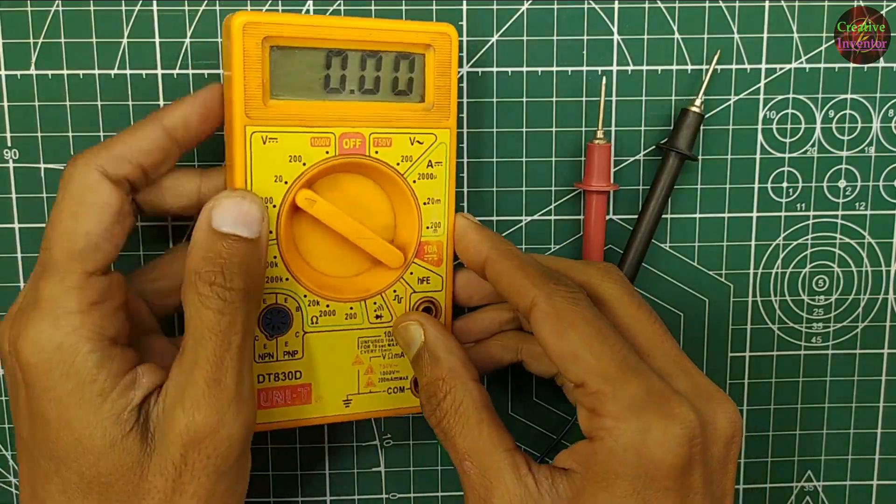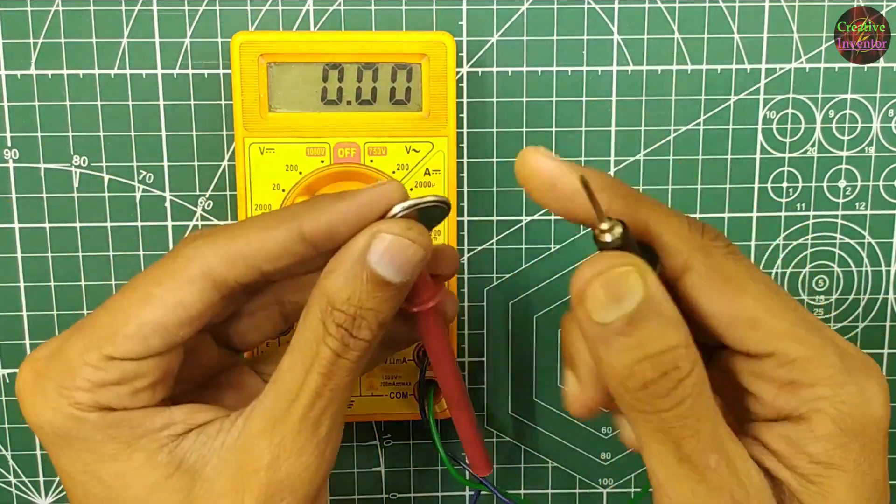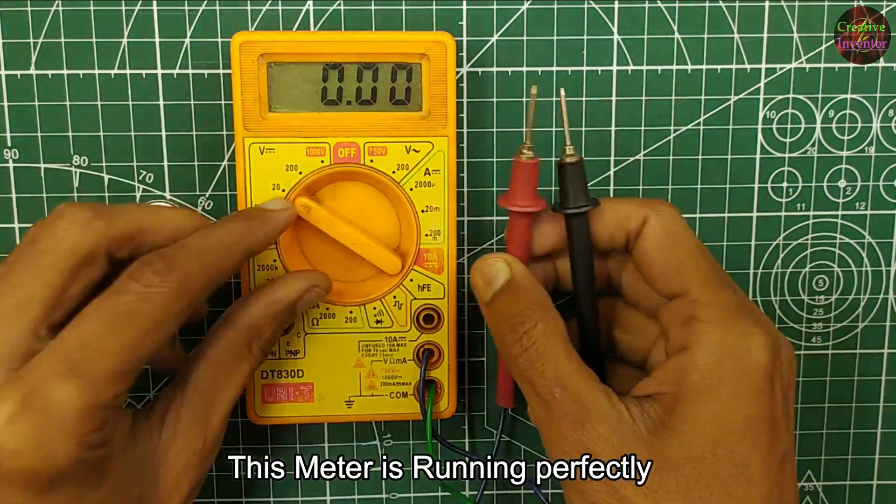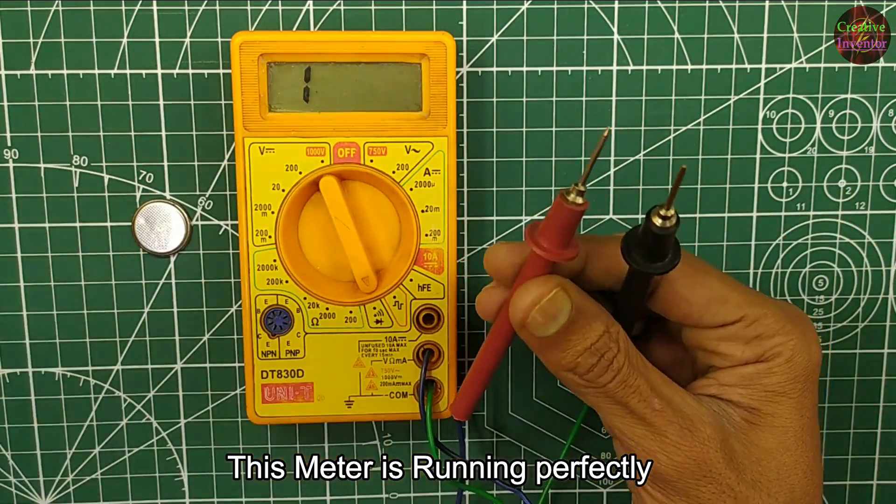In today's video we will check how much current a multimeter takes from a 9 volt battery when it is turned on and in working condition.